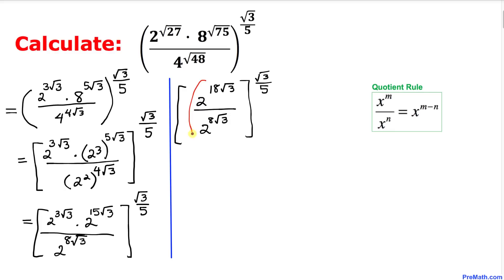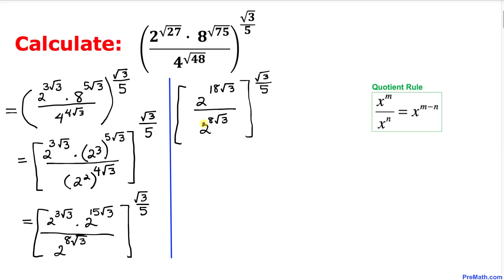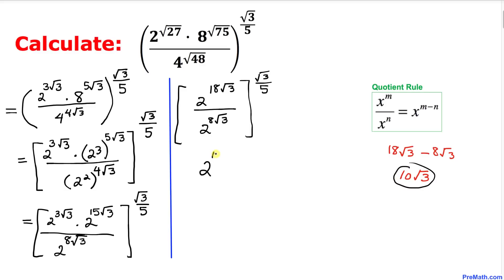Now let's simplify the fraction inside the bracket using the quotient rule. Since our bases are the same, we subtract the exponents. Subtracting 8 times square root of 3 from 18 times square root of 3 gives 10 times square root of 3. So the expression becomes 2 power 10 times square root of 3, raised to the power of square root of 3 divided by 5.